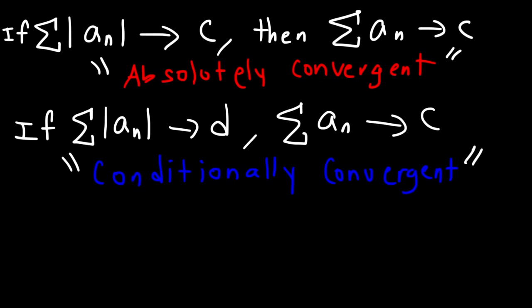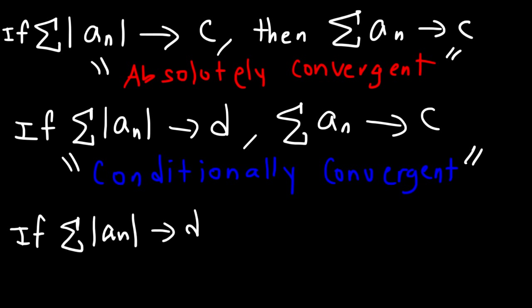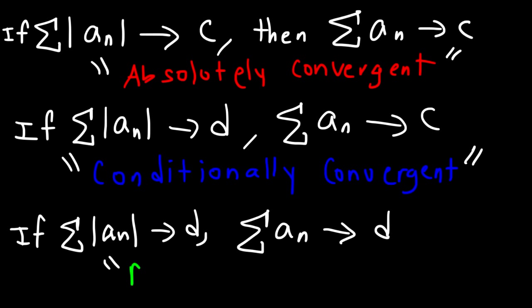Now, if we're analyzing the absolute value of the series and find it to be divergent, and then we analyze the original series and that diverges as well, then we can simply say that the entire series is divergent.